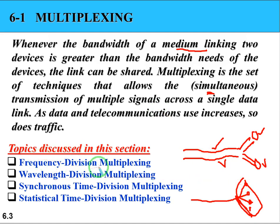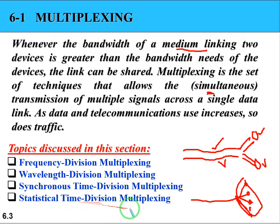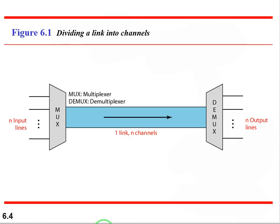The topics in multiplexing we need to study are: frequency division multiplexing (FDM), wavelength division multiplexing (WDM), synchronous time division multiplexing (TDM), and statistical time division multiplexing (also TDM). Coming to figure 6.1 — dividing a link into channels.